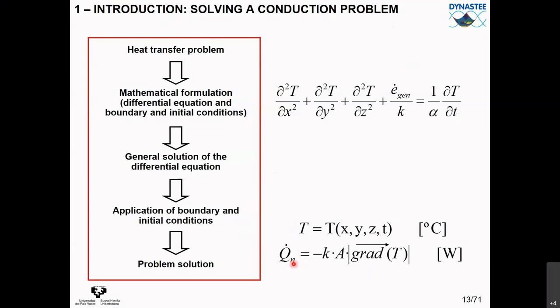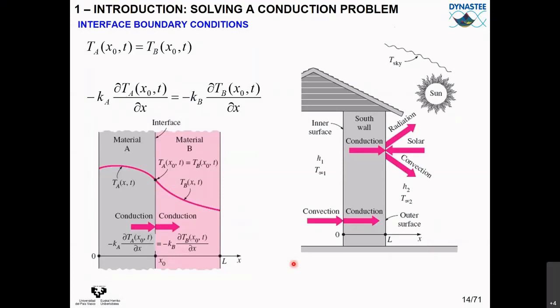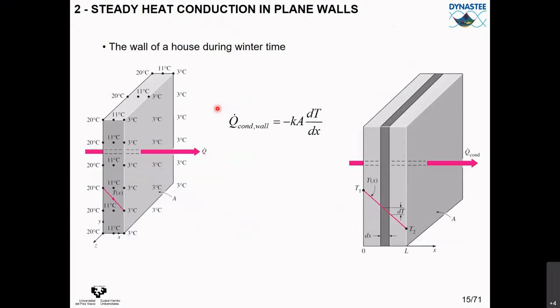In theory, a conduction problem is solved by taking the differential equation, integrating it, applying boundary and initial conditions, and obtaining the temperature distribution of the wall. Then you use Fourier's law to get the heat flow. If you want to calculate the conduction heat flow from physical laws, you need to know how the temperature is distributed within the wall — for example, 20°C here, 18°C here, 16°C, down to 12°C. Once you know the temperature distribution, you can calculate heat flows at any point.